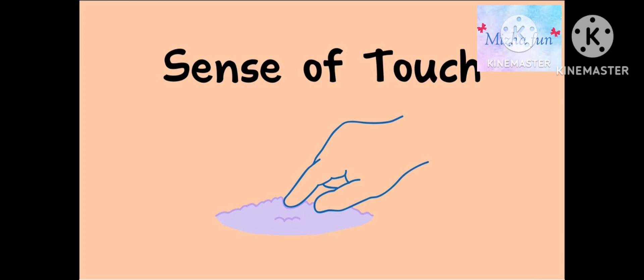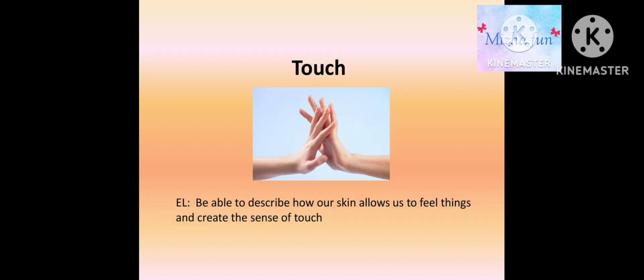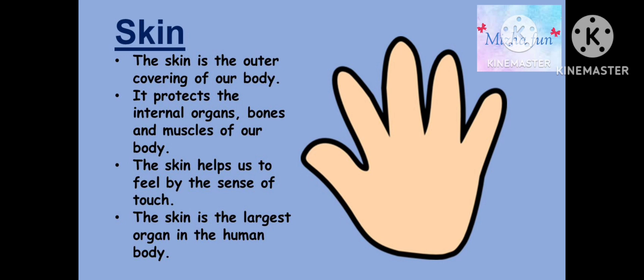The next sense organ is skin. There are four sense organs—eyes, nose, ears, and tongue—which we can find on our face, but the skin is all over our body. Skin is a very important sense organ from which we can feel the touch.